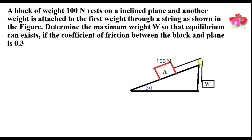Hello friends, we have come with yet another video in applied mechanics. In this video we will deal with a problem related to friction. Our problem is: a weight of 100 Newton rests on an inclined plane and another weight is attached to the first weight through a string as shown in the figure. Determine the maximum weight W so that equilibrium can exist, if the coefficient of friction between the block and the plane is 0.3.